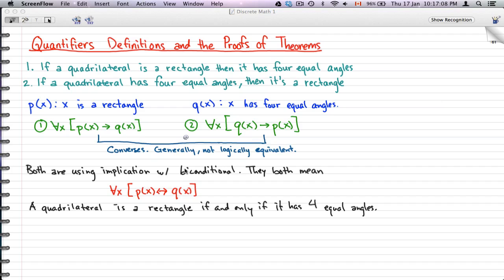That is, if x is a rectangle, then x has four equal angles. If x has four equal angles, then x is a rectangle. So another way of saying this is, a quadrilateral is a rectangle if and only if it has four equal angles.